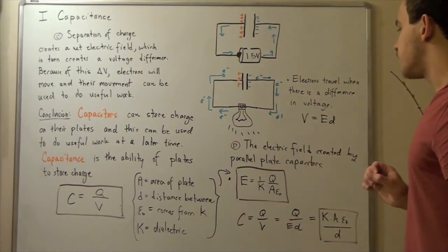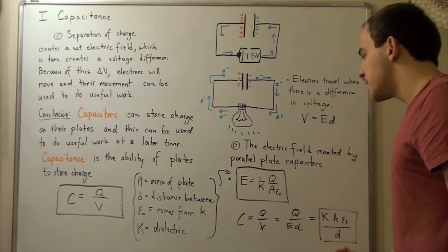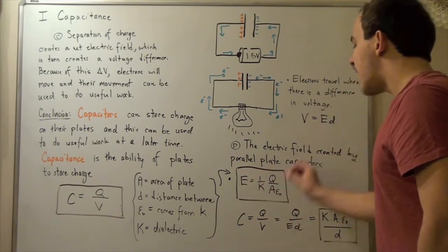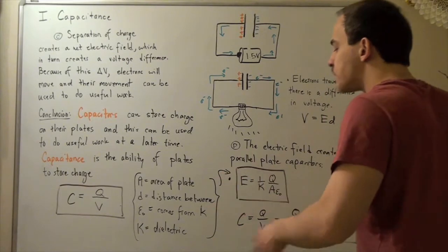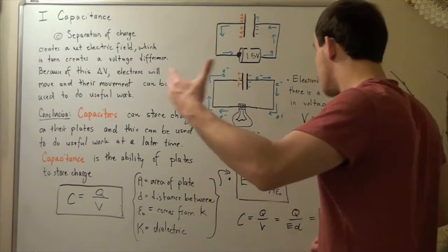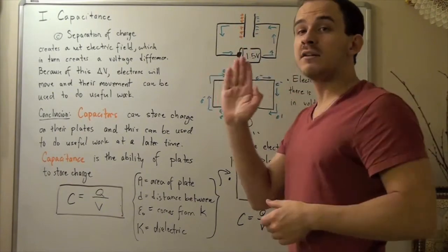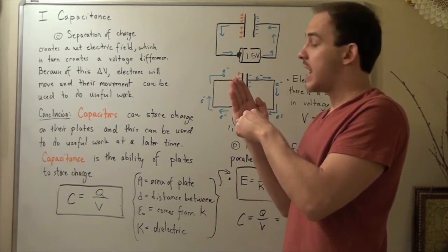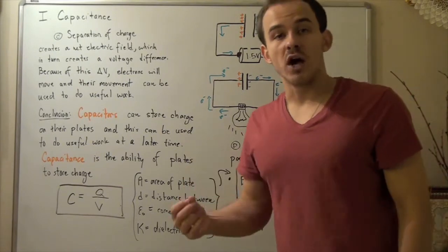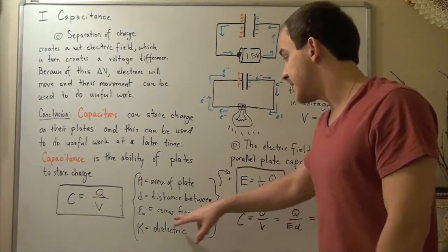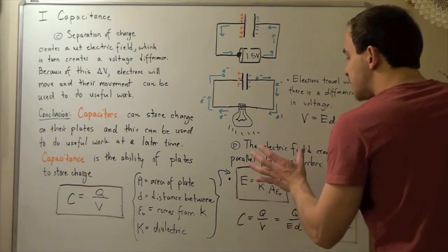The electric field created by parallel plate capacitors can be found using the formula E = Q/(KAε₀), where K is the dielectric constant (to be discussed when we cover dielectrics), Q is the charge on the plates, A is the area of the parallel plate (length times height), and ε₀ comes from Coulomb's law. This is the formula for the electric field between two parallel plates.